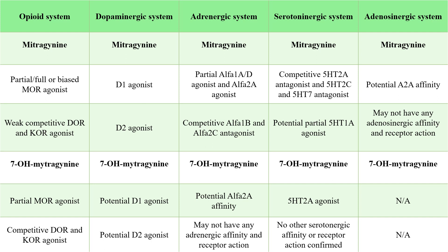Turning to the pharmacological profile of 7-hydroxymitragynine, it appears to function as a partial agonist of mu opioid receptors and a weak antagonist of delta and kappa opioid receptors. In the dopaminergic system, 7-hydroxymitragynine interacts with both D1 and D2 dopaminergic receptors, with research suggesting potential agonistic activity. Recent research has indicated that 7-hydroxymitragynine may have an affinity for α2a adrenergic receptors, though its precise action remains unknown, and some studies postulate it lacks affinity for adrenergic receptors altogether.